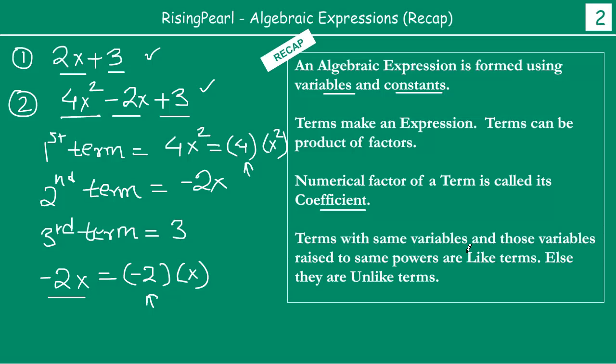Now what do we mean by like terms and unlike terms? Let's take an example. Let's write some expressions: say 5x, 2x plus 3 - these are different expressions.